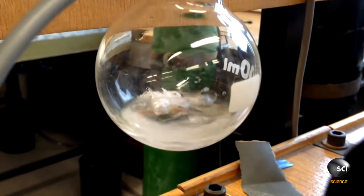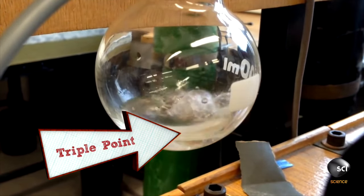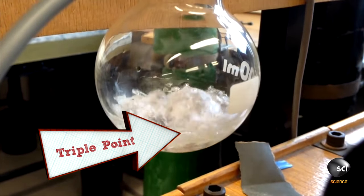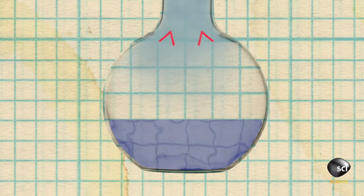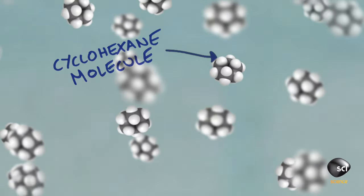So how did our student scientists stumble across the triple point? It looks like water in that flask but actually it's something called cyclohexane. What they're doing here is actually vacuuming out what we call the headspace of the flask, which is the gas that is just above the liquid.